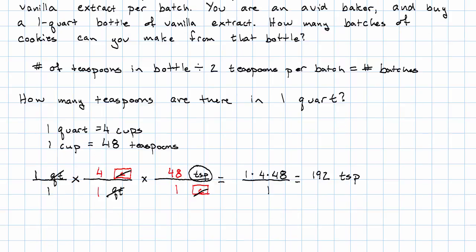So to answer my original question about the cookies, then, I have 192 teaspoons divided by 2 teaspoons per batch. And again, I can use the calculator if I'd like. I get 96 batches.